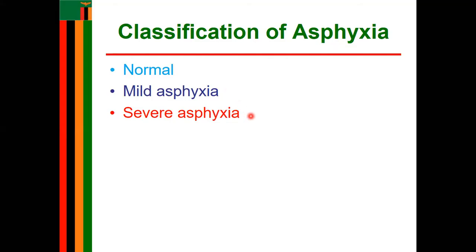Severe asphyxia has an APGAR score of less than 5 at one minute. There is a slow, feeble heart rate which may be even less than 40 beats per minute. There is no attempt to breathe, poor muscle tone, the baby is limp and unresponsive to stimuli. The baby looks grayish due to vasoconstriction, there is prolonged lack of oxygen before or after delivery, circulatory failure is present, and the baby may even be in shock.